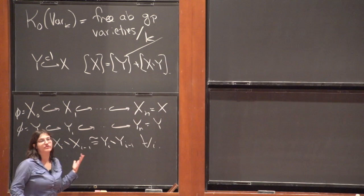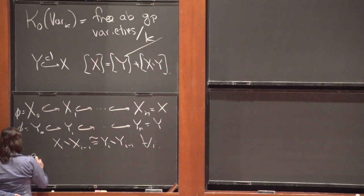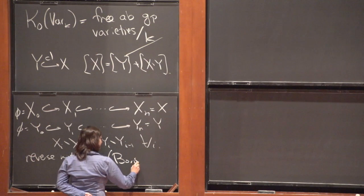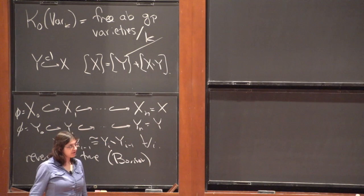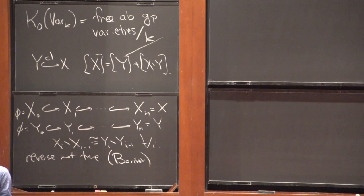Unfortunately the reverse doesn't hold — we know this now, and it is due to Borisov. There are actually a whole bunch of bad things about this ring. For instance, it has zero divisors — the class of the affine line is a zero divisor. So it's a really difficult ring to work with.